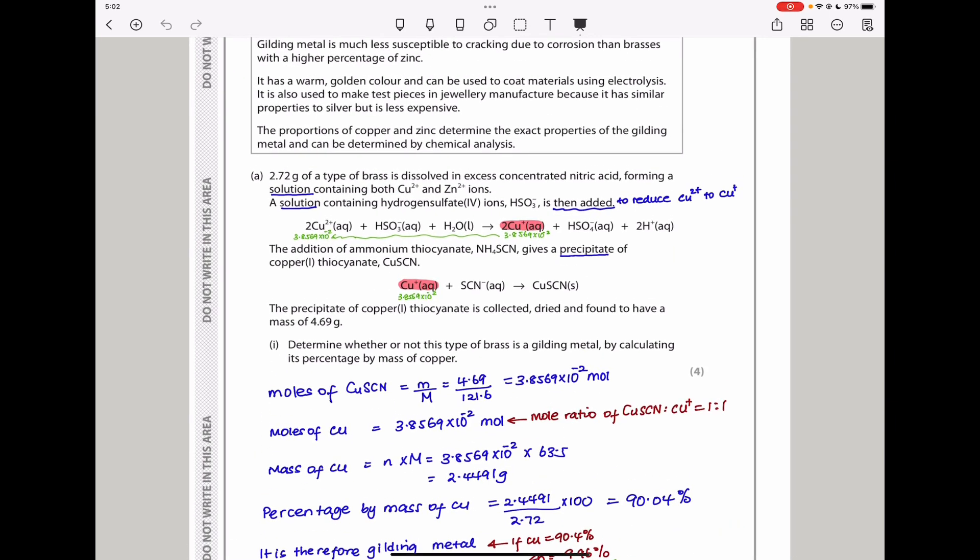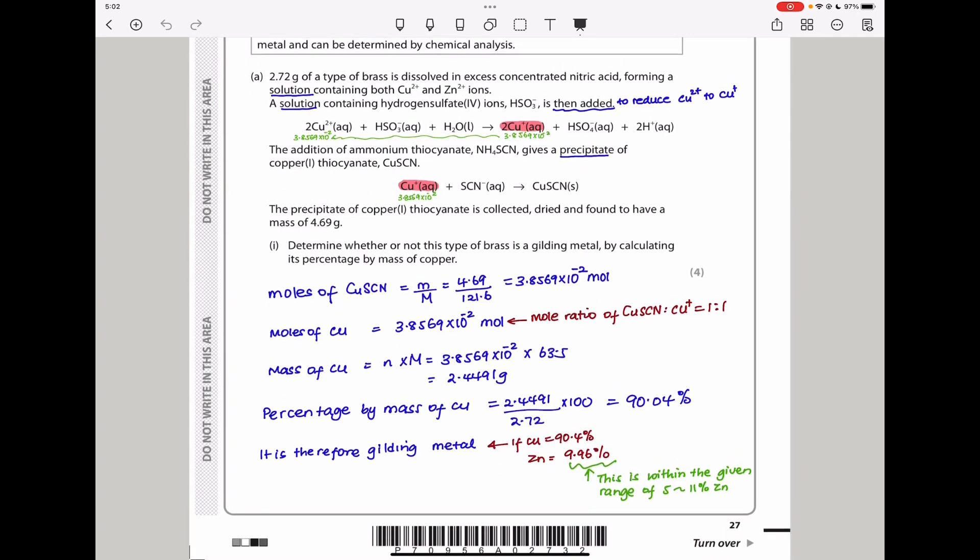The percentage by mass of zinc is going to be 9.96%, which is the difference. 100 minus that gives us that. We go back to our range they gave us, 5% to 11% by mass of zinc qualifies as gilding metal. We see this percentage lies within that range so we can confirm that this is going to be gilding metal.